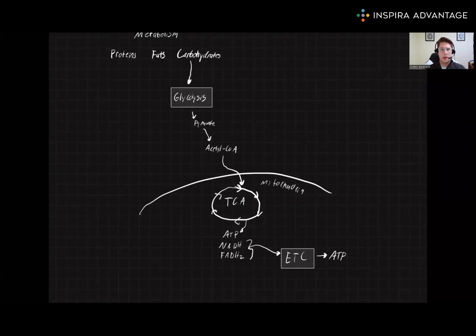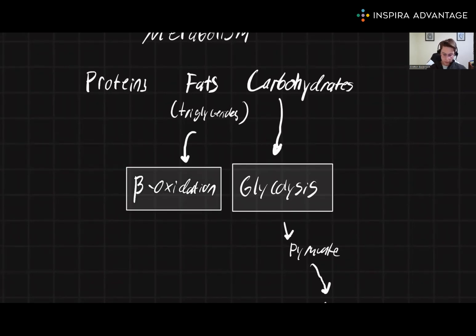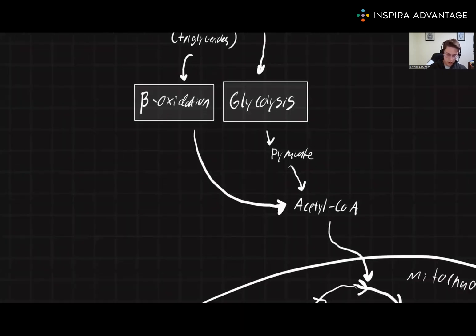Where do the other things fit in? Let's take a look at fats first. Fats or triglycerides will undergo the process of beta oxidation. During beta oxidation, again, we are going to produce some acetyl-CoA as well as some molecules that are going to sound familiar. We're going to make some NADH and some FADH2.